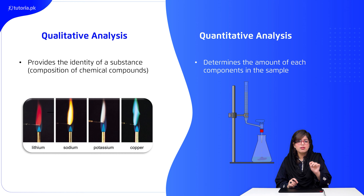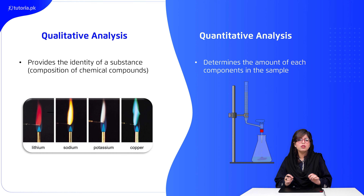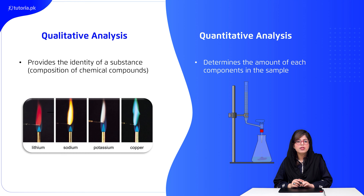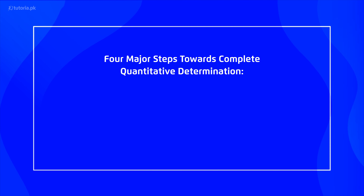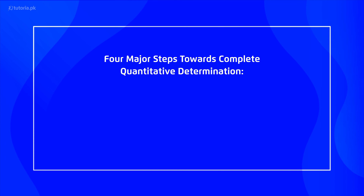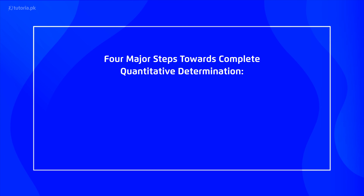مثال کے طور پر جب آپ sodium کو flame پر heat کرتے ہیں تو وہ golden yellow color دیتا ہے — یہ اس کا characteristic flame ہے۔ اگر ہمیں elemental analysis کرنا ہو اور نہیں پتا کہ compound میں sodium present ہے، تو flame analysis کریں گے اور golden yellow flame دیکھ کر پتہ چل جائے گا کہ sodium present ہے۔ اسی طرح lithium red color دیتا ہے، potassium اور copper بھی characteristic colors دیتے ہیں۔ یہ qualitative analysis کی مثالیں ہیں۔